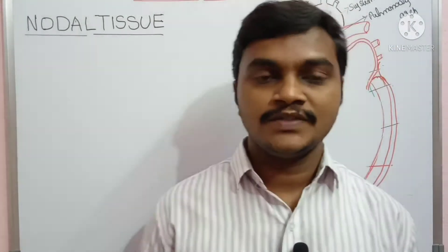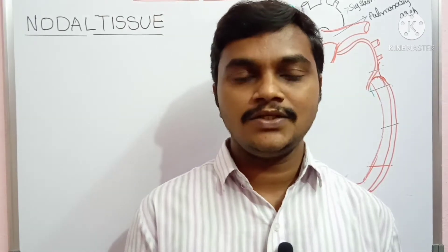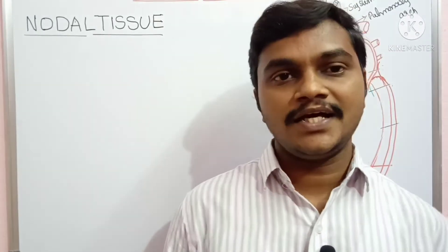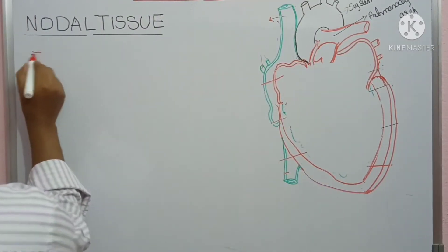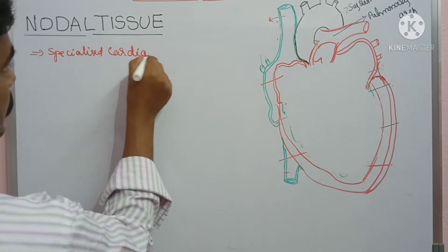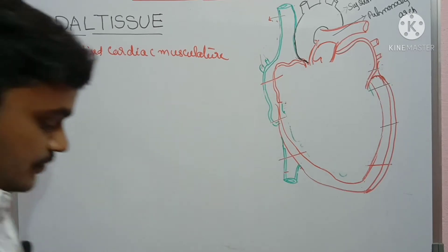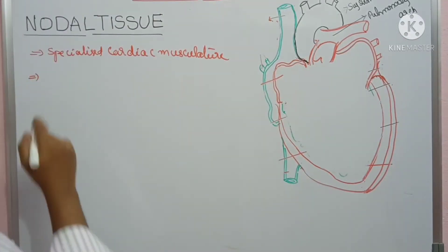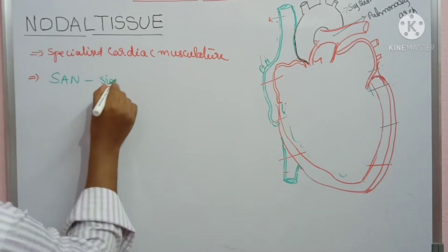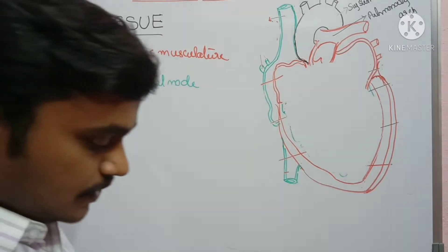Hi students, welcome to our channel. Today I am going to explain nodal tissue. Nodal tissue is nothing but a specialized musculature present in the heart. The cells are called cardiomyocytes. This specialized cardiac musculature present in the heart is called nodal tissue. Nodal tissue mainly contains two nodes — one is SAN, the sinoatrial node.